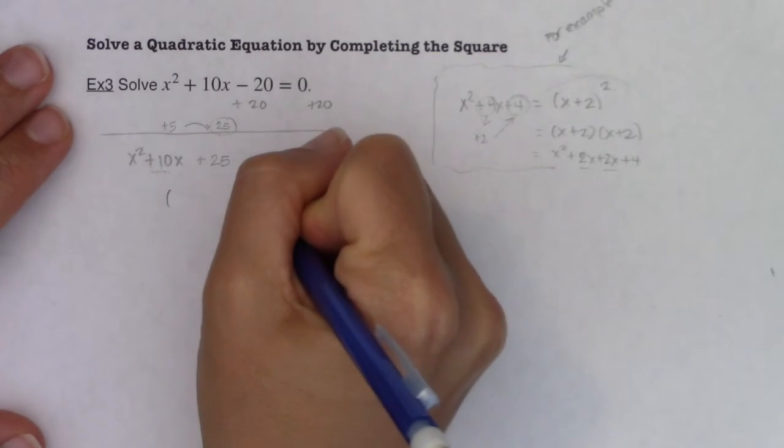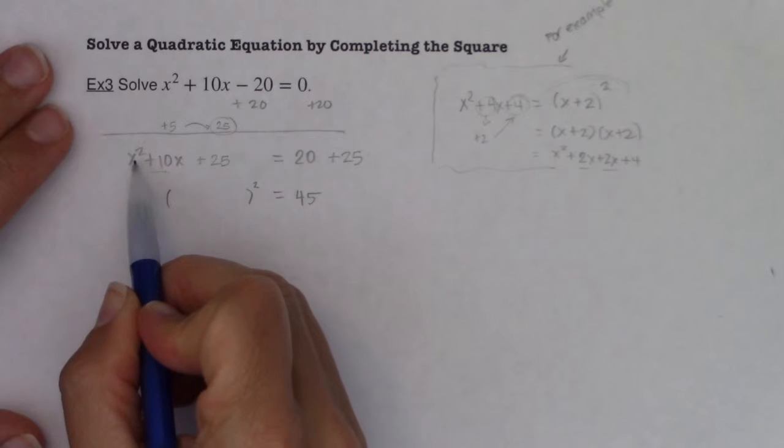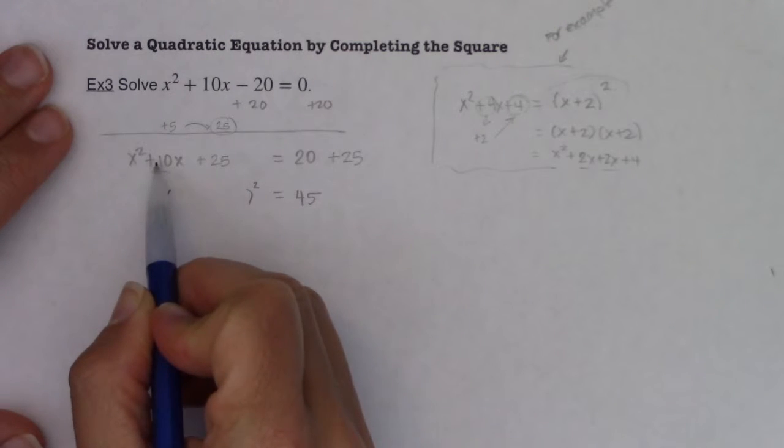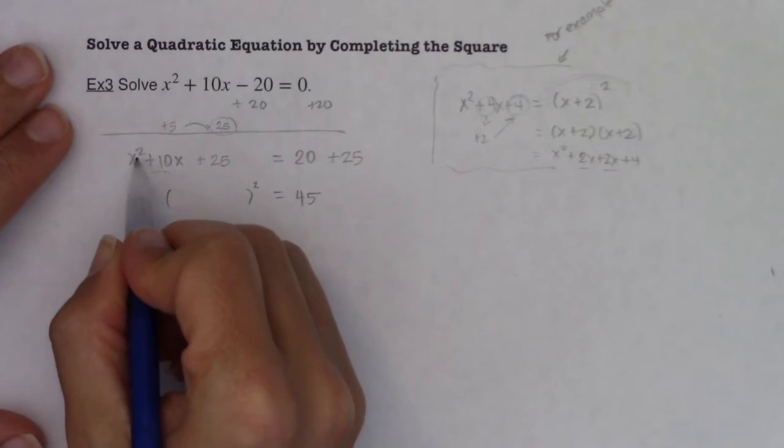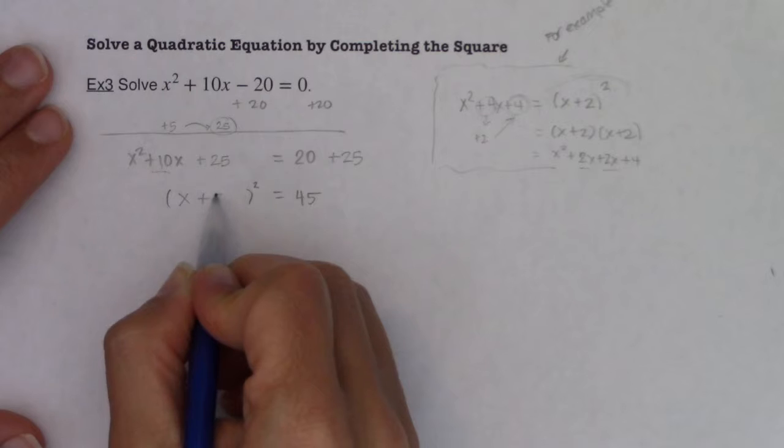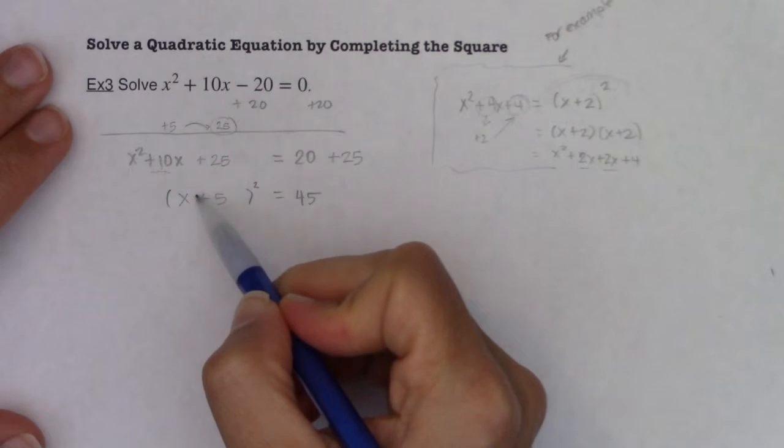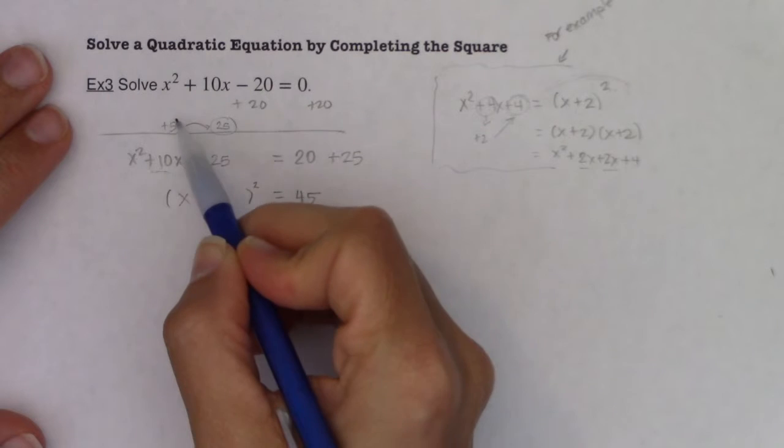Now the left side turns into a perfect square trinomial, all right? So how can I rewrite x squared plus 10x plus 25 as a binomial squared? Well, what squares to x squared? x. What squares to 25? Positive 5. Why do I know this is positive 5 and not negative 5? Because I have the positive 10x here, right?